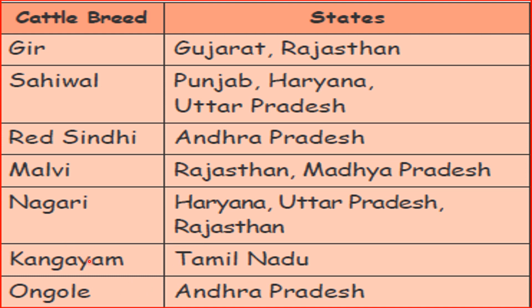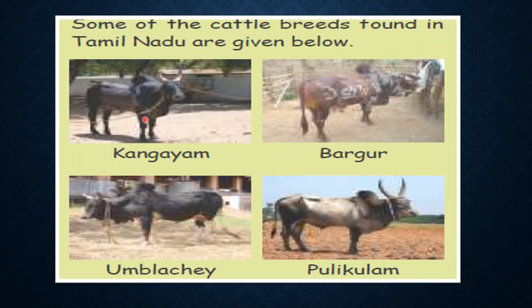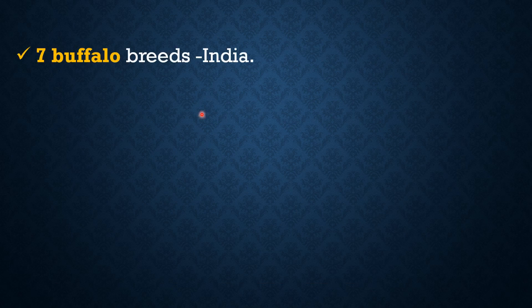Other Tamil Nadu cattle breeds include KANGAYAM, UMBLACHERY, PULIKULAM, BARGOOR, and INDHVAKAYAM. These are the cattle breeds found in Tamil Nadu.